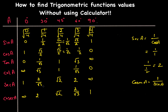For cosecant, either compute 1 over each sine value or flip the sine row in the opposite direction. I hope this is helpful — please share with your friends and subscribe to the channel. Thanks for watching!